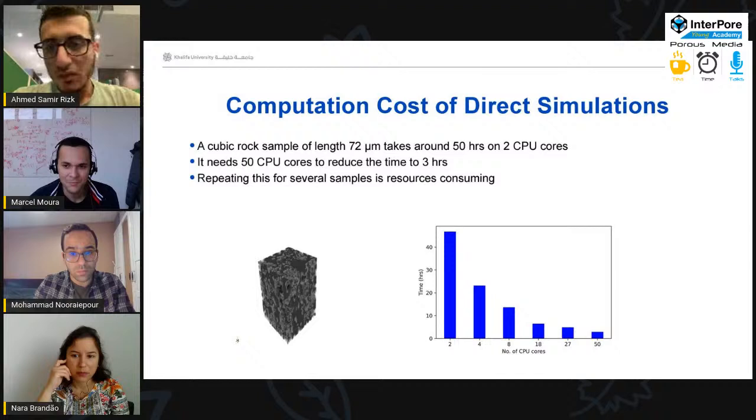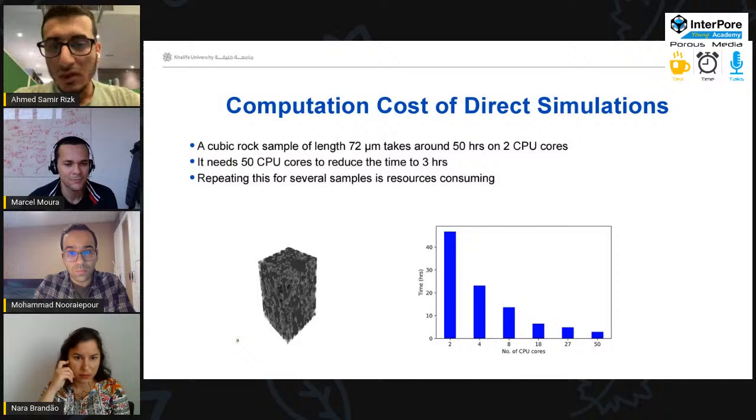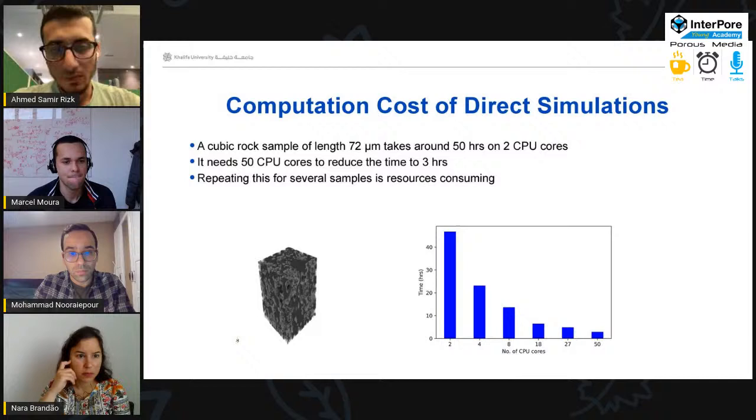But these direct simulation methods are very computationally expensive in terms of resources, as well as in terms of time. For example, if we want to simulate a cube rock sample of length only 72 micrometers, this takes around 50 hours on two CPU cores. However, to reduce this number to three hours only, we need around 50 CPUs. And repeating this process for several images is very, very resource consuming.